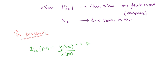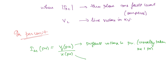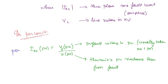The pre-fault voltage Vf in per unit is usually taken as 1 per unit — this is an assumption but is the standard convention. The reactance in the denominator is the Thevenin's per unit reactance as seen from the fault point.